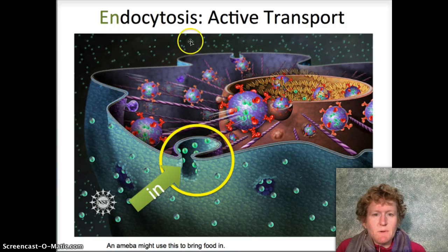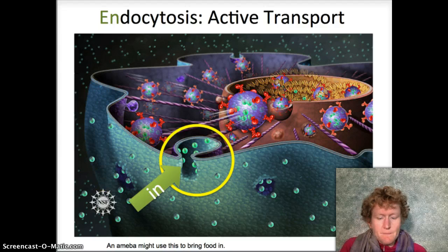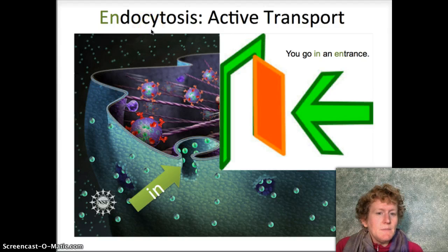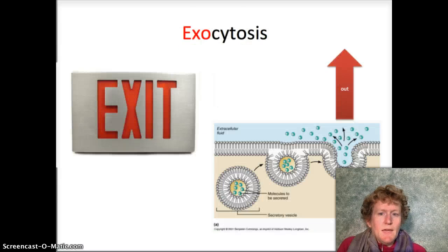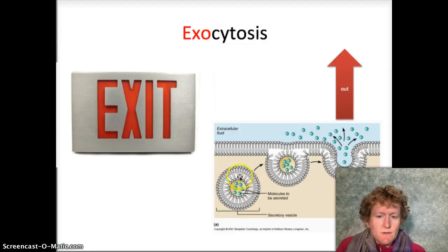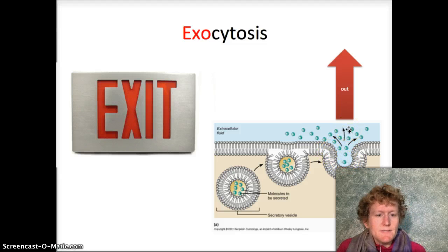Another form of active transport is endocytosis. Endo means in — an amoeba might use endocytosis, folding the membrane around something to bring in food. An entrance is where you go in, and 'en' and endocytosis start with the same two letters. Exocytosis is used to move things out of a cell — like an exit in a building. Cells use a vesicle, packaging up molecules, moving it to the cell membrane, merging it, and releasing those molecules out. That's exocytosis.